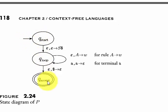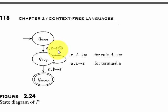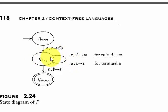First, you would fundamentally have three states: q_start, q_loop, and q_accept. The q_start is the starting state where you insert the start symbol — the stack symbol. The q_loop is the state where you push the variables and pop the terminals from the context-free grammar. And q_accept is the state where you just pop the stack symbol.